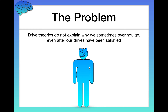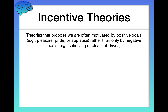As a result of this limitation, psychology now tends to supplement drive reduction theory with what's known as incentive theories — using both in tandem. Incentive theories propose that we're often motivated by positive goals as well as negative ones. Drive reduction theory says we're motivated by satisfying unpleasant drives and getting rid of negative feelings. But incentive theory adds that we're also motivated by positive goals like pleasure — the extra pleasure that two additional slices of pizza gives us — as well as things like pride or applause.